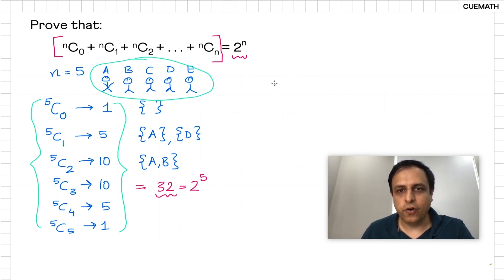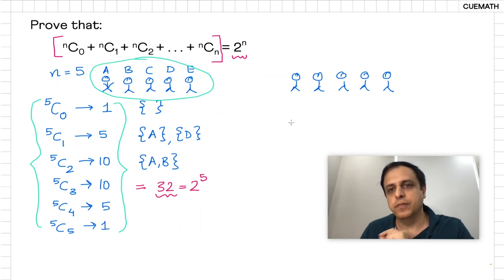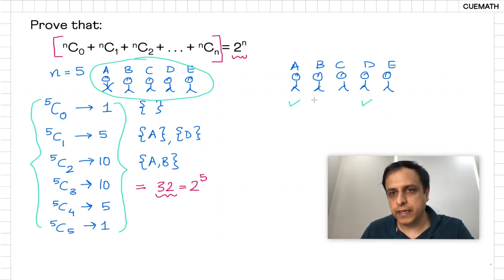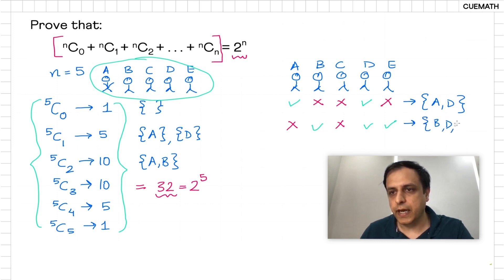To understand why, we draw these 5 people again — Adam, Bob, Carol, Dan, and Eve. The logic is that to create a subset and count the number of subsets that can be formed, we make a decision about every person: whether to include that person in our subset or not. For example, if I select Adam and Dan but not Bob, Carol, and Eve, this combination of ticks and crosses gives me the subset {Adam, Dan}. Similarly, selecting Bob, Dan, and Eve but not Adam and Carol gives the subset {B, D, E}. Every possible subset is just a sequence of ticks and crosses — a decision on each person whether to include them or not.